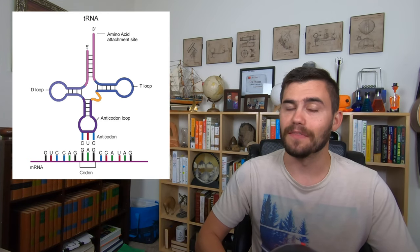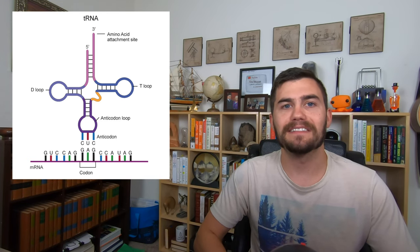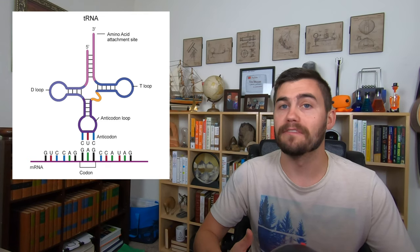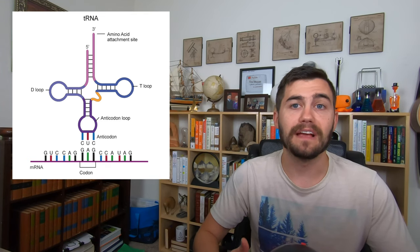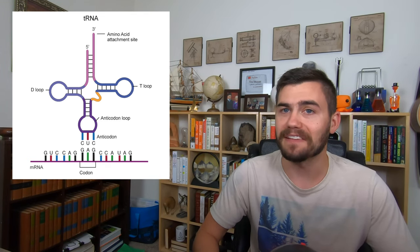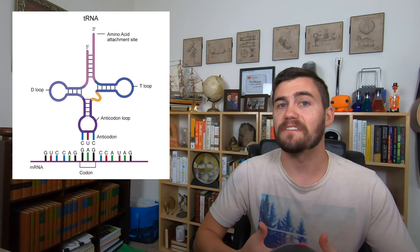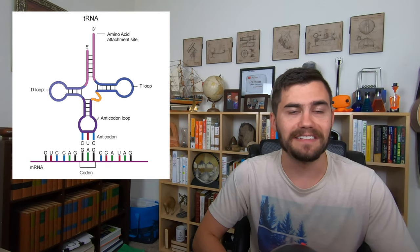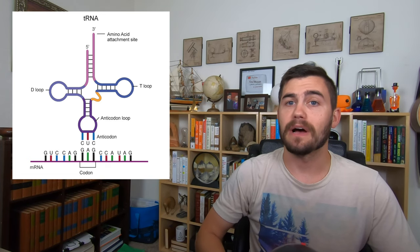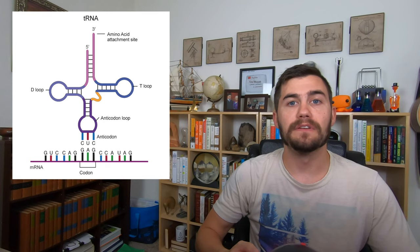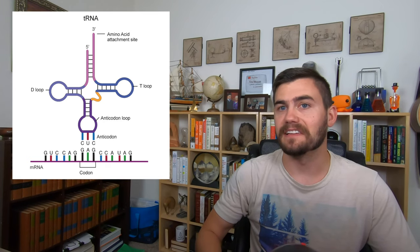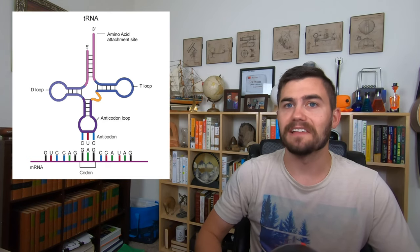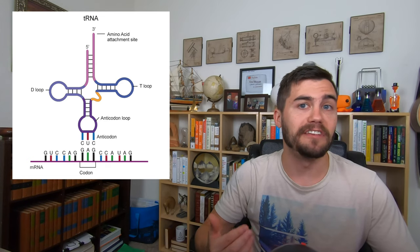Again, this will be covered in more detail in the next video, but the anticodon loop contains a group of three nucleotides that are the complement to part of the messenger RNA molecule. If a tRNA molecule has the nucleotide sequence UGC on its anticodon loop, that will find a spot on the messenger RNA where the nucleotide sequence is ACG. ACG is the complement or opposite of UGC.